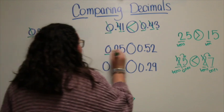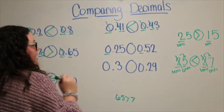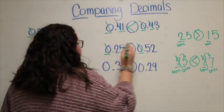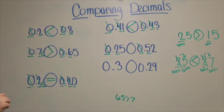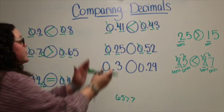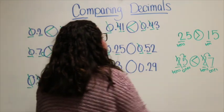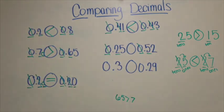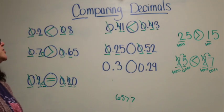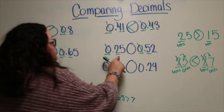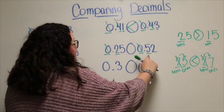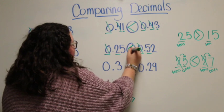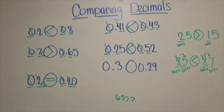My next example: starting in my ones place — they are both zeros. So I go to my tenths place. Remember, don't get confused — don't look at this as twenty-five and fifty-two. I'm going to say my place value: I have two tenths and five tenths. And I can see that five tenths is greater than two tenths.